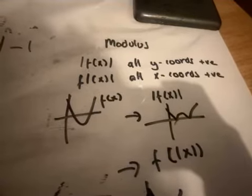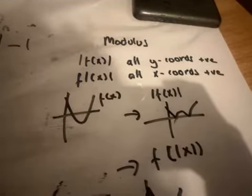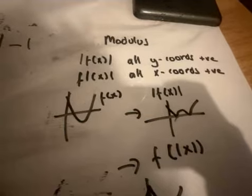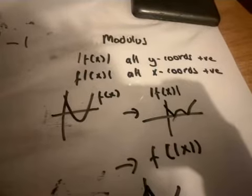What is a modulus? It is also known as the Absolute Value. It turns things positive. And there's two types of graph transformation that you generally have to deal with. The one where the modulus is covering the entire function, and the other one where the modulus is just touching only the x.